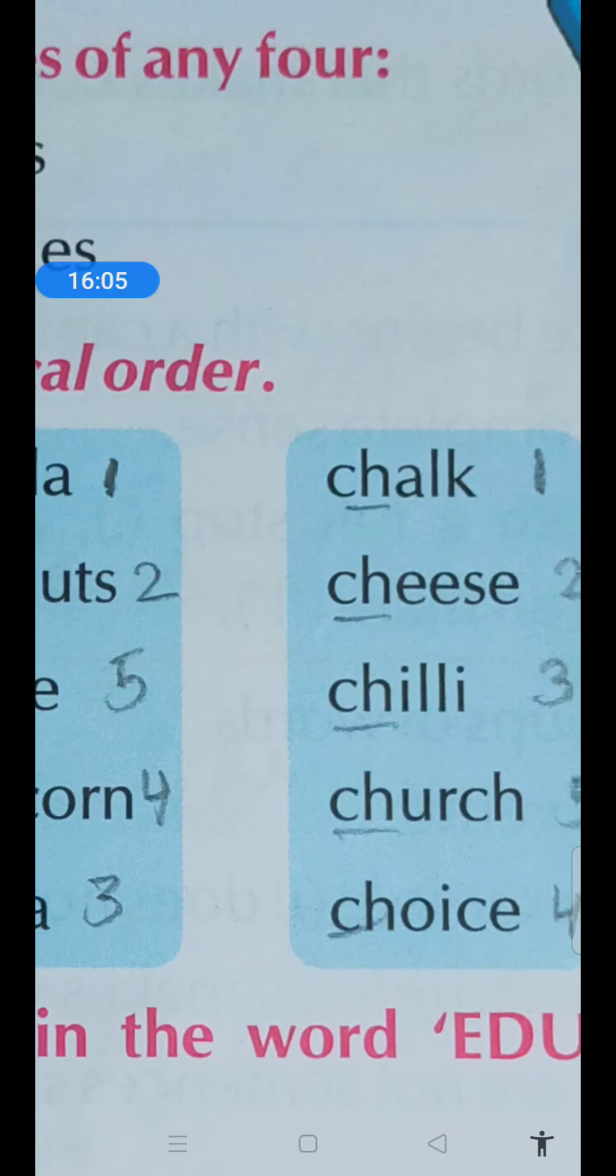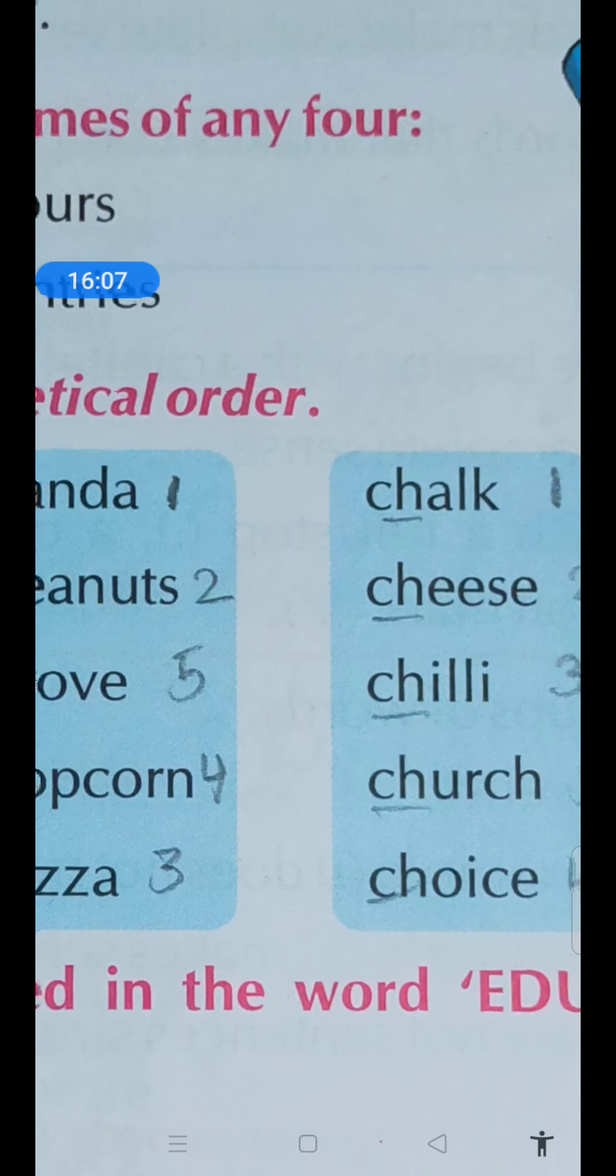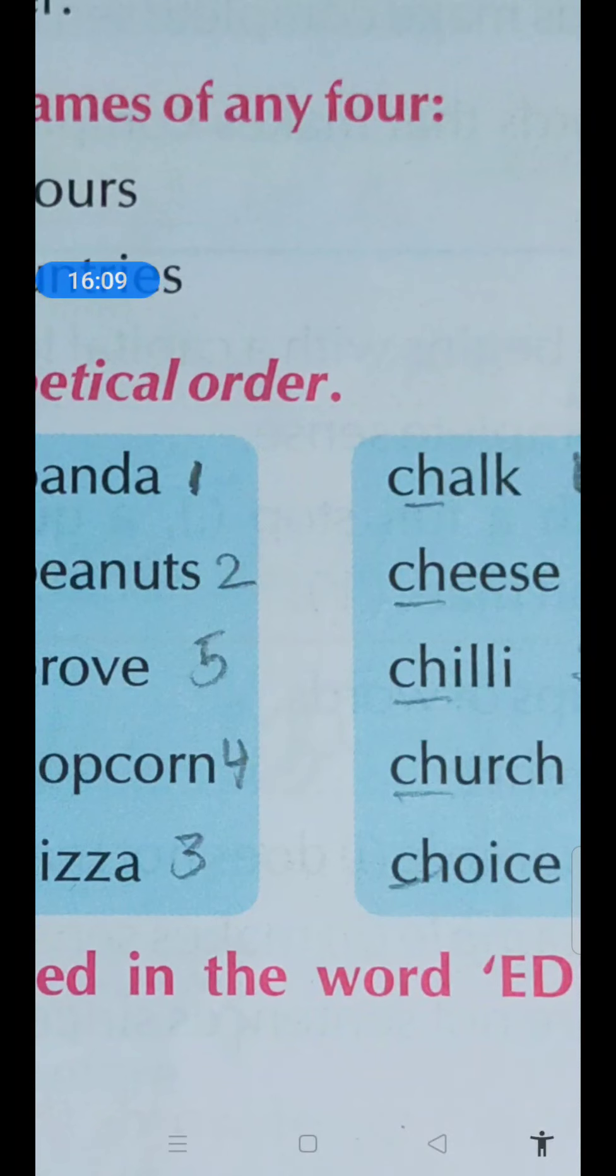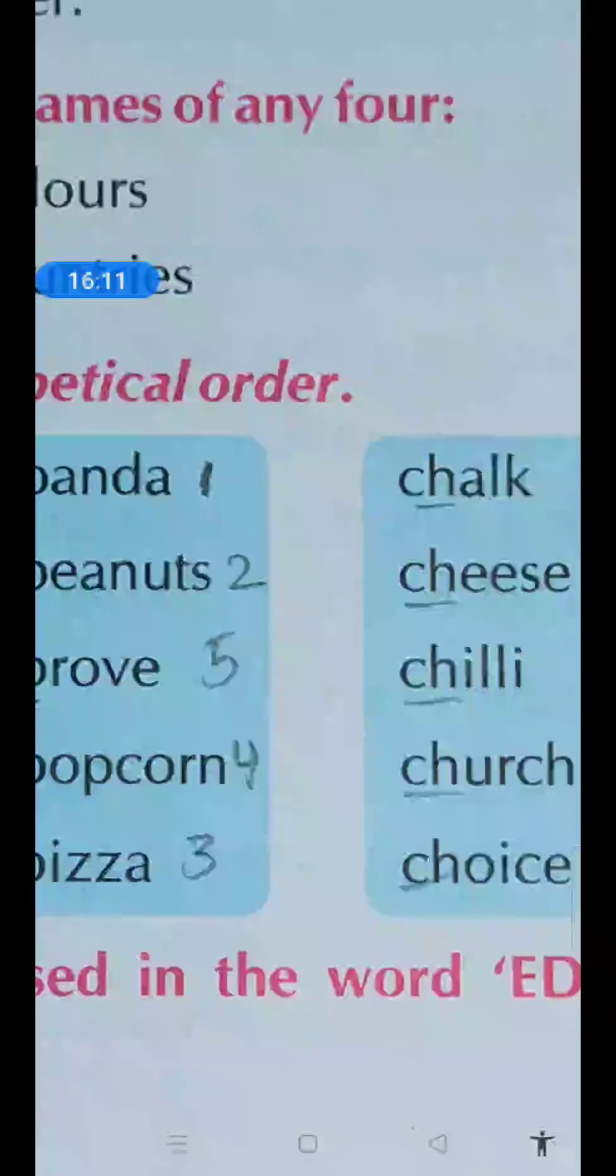Third one. Wow. This is another example which is very different. And here we can see all the words starting with C-H. Means the first letter is the same and even the second letter is also the same.